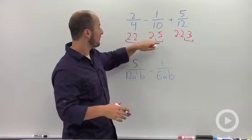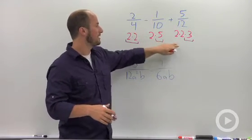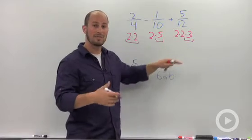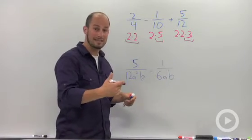So 2 times 2 is 4, times 5 is 20, times 3 is 60. So my least common denominator for all of this is 60.